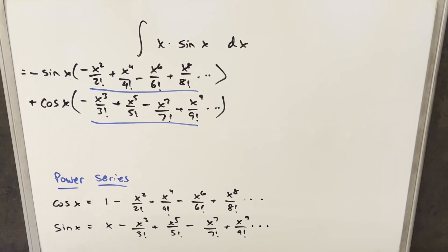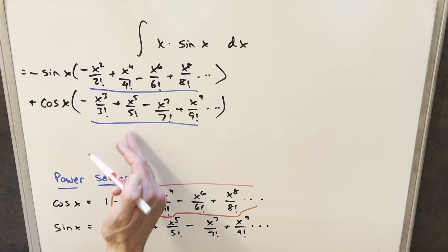Now we have our formulas for the power series for cosine and sine down here at the bottom of the board. We're really close to what we have in parentheses here. For this top one, this is just this part of the expansion for cosine x right here. For this, we have almost the same kind of thing where it's everything except for the x.